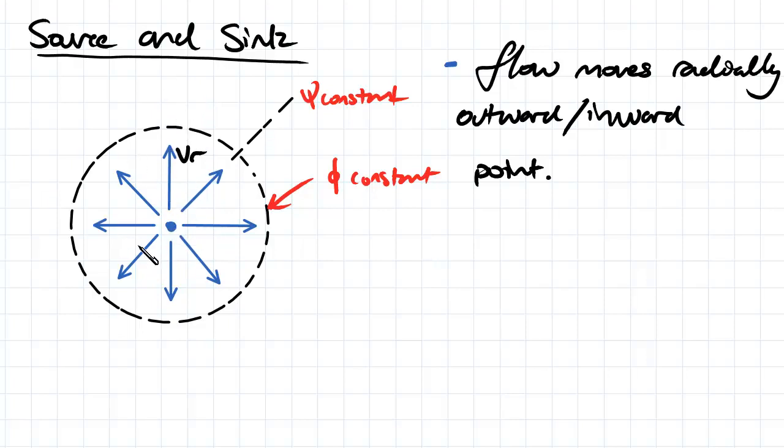If the flow was inwards to this point, we'd be looking at a sink. Along these radial lines we form our streamlines, and then there are concentric circles that run around this point - these are our velocity potential lines.